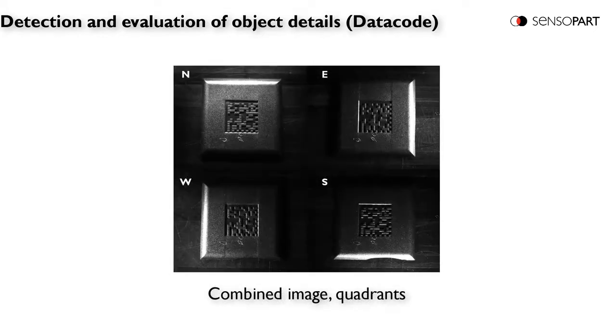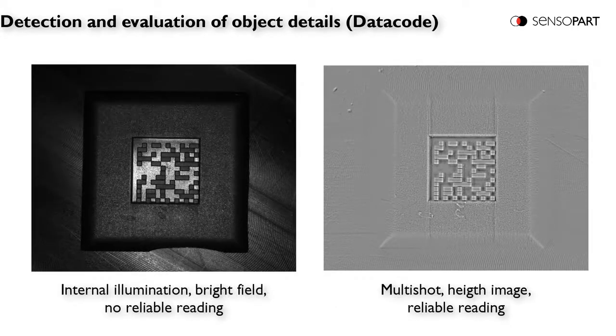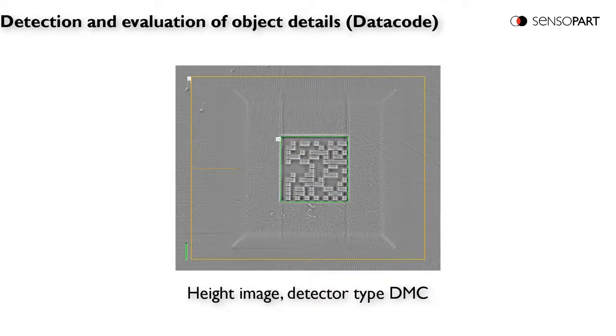Here's all four of them together. And the algorithm combines them, as you see on the right, with the raw image on the left, raw image bright field. And using the height multi-shot algorithm, you can decode this ECC200 code.